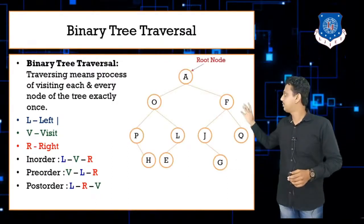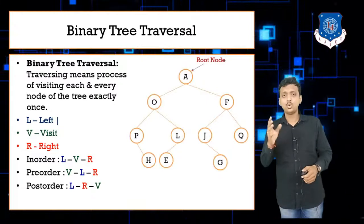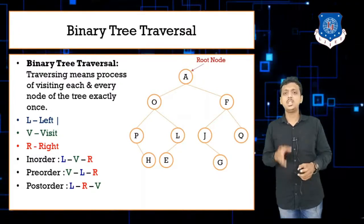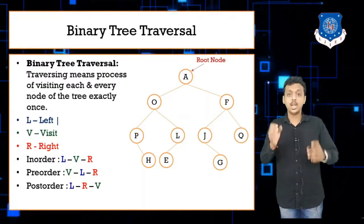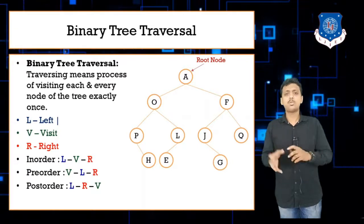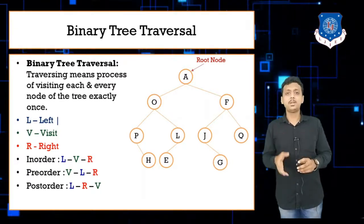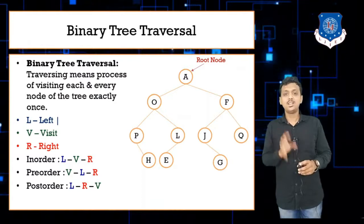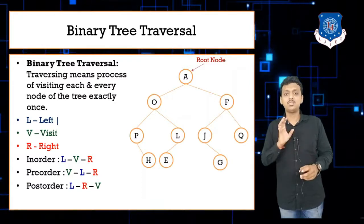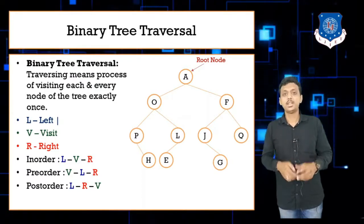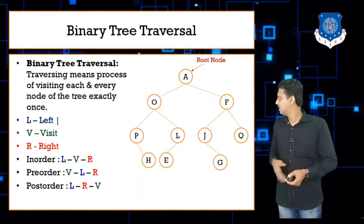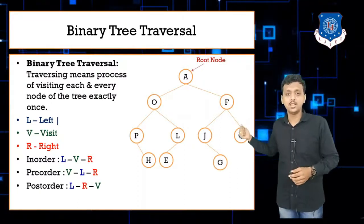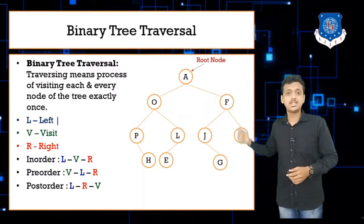Here is the figure. The root node A is there, with nodes O, F, P, L, H, E, J, Q, and G. I am just taking the common example in each and every lecture so you will understand it very easily. I am going to perform each and every operation on this figure, on this tree.